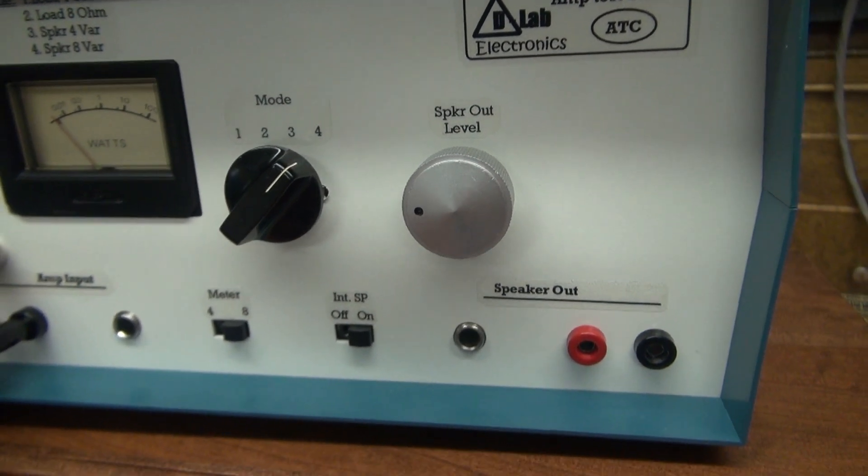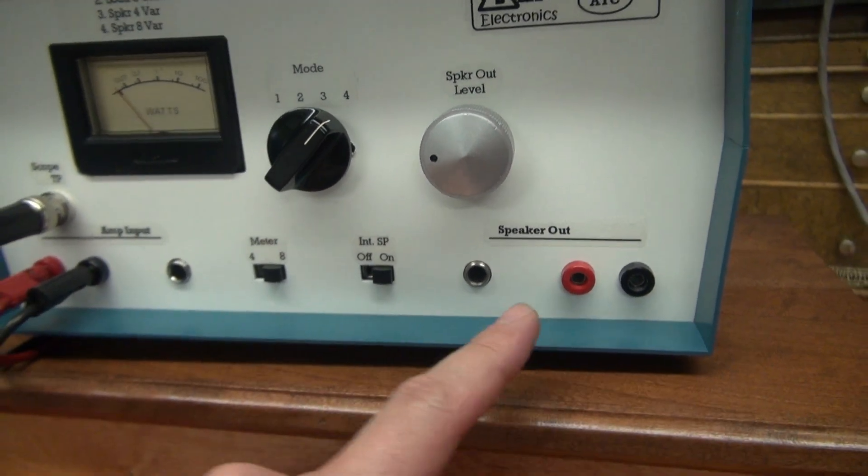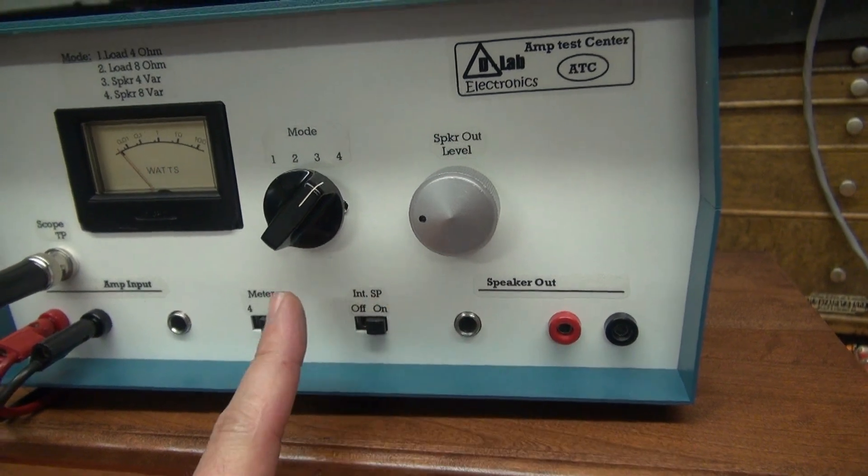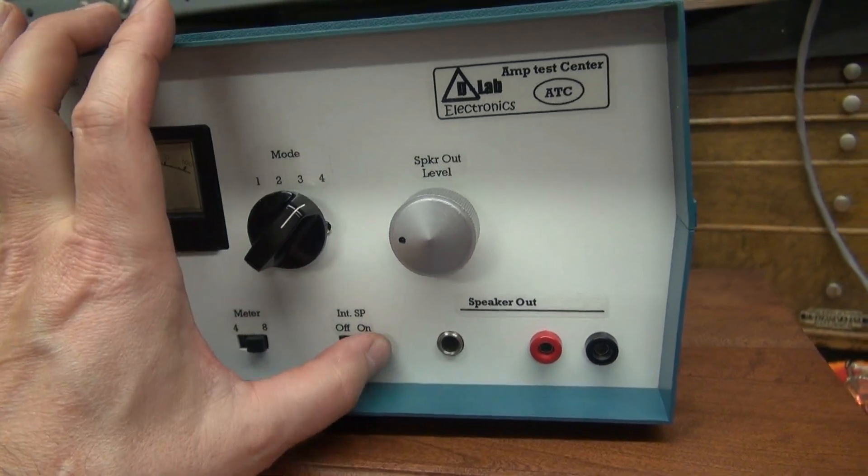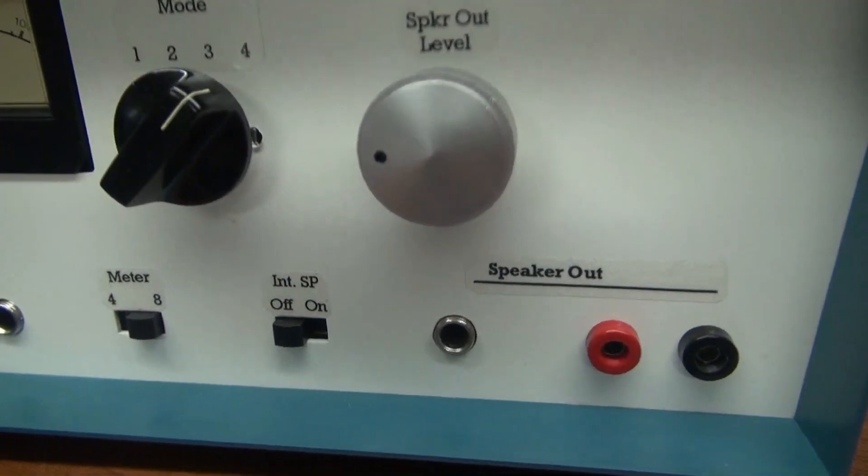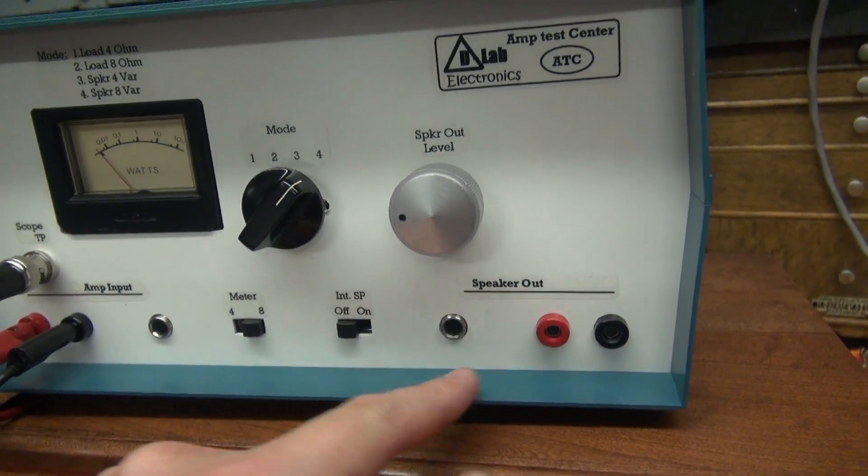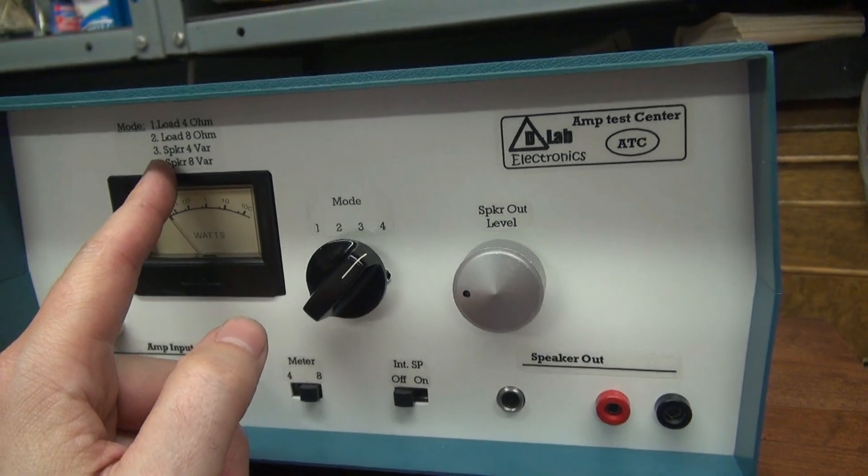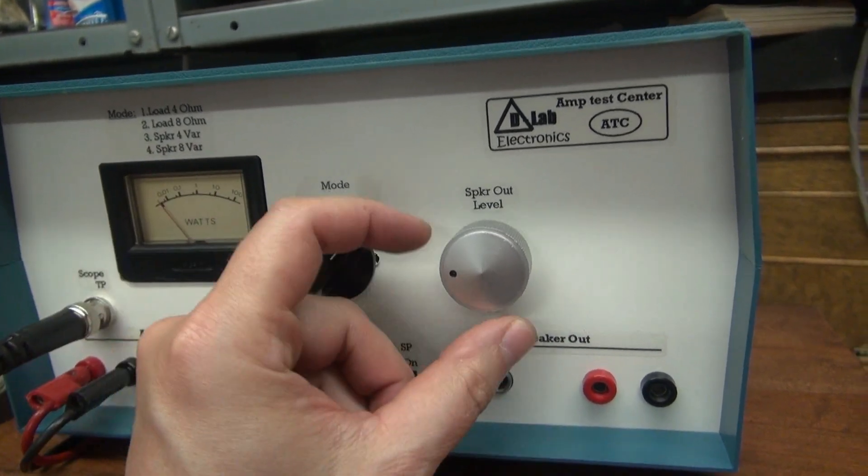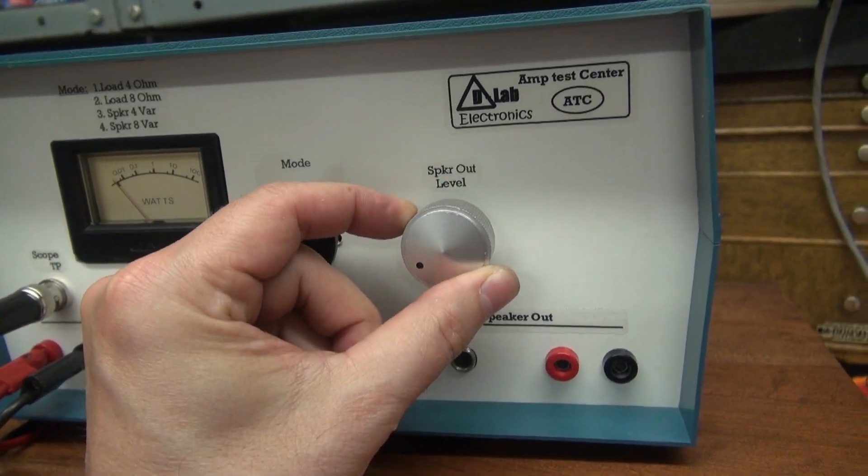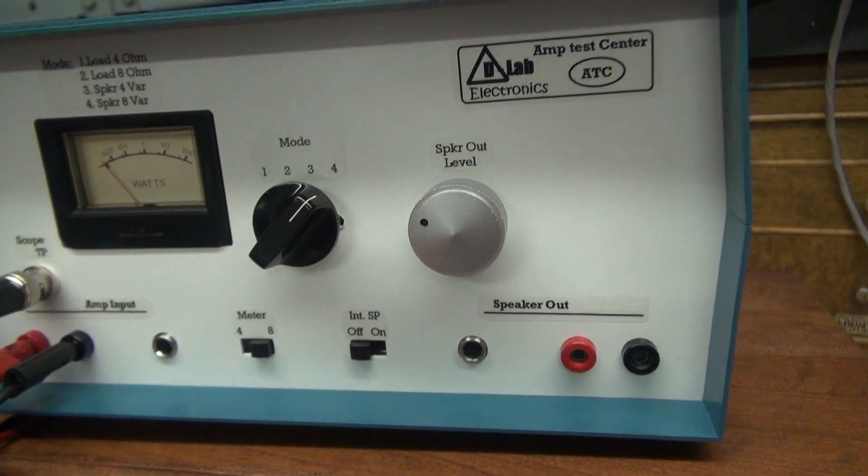So let's say you have an external speaker that you want to connect to monitor rather than the internal speaker. Simply flip that switch and the internal speaker is off. Connect your external speaker. Select the mode, whether it's 4 or 8 ohm variable. And you can use the L-pad and add variable output to your test speaker.